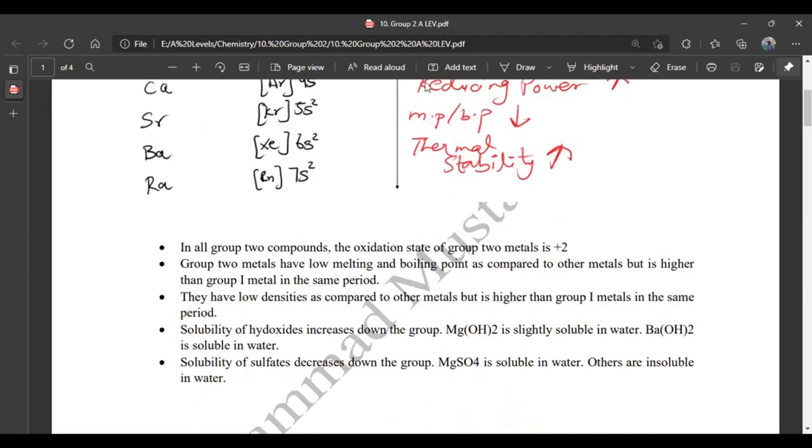We say that Group 2 metals have low melting and boiling points as compared to other metals, but it is higher than Group 1 metals in the same period.